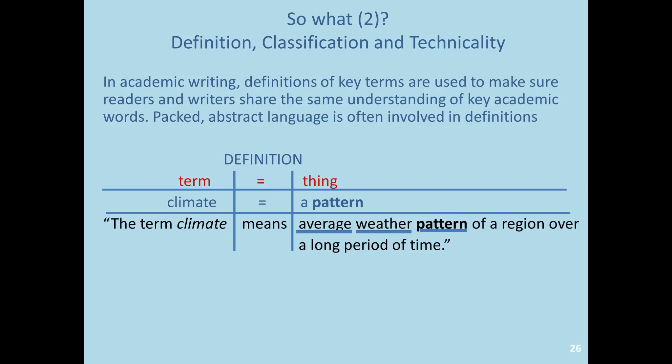A definition generally involves a key term that we want to define, some kind of verb that acts like an equal sign, like the verb 'to be,' and then a defining word, which is a thing. In the case of climate, we have 'climate means,' and then what climate is: climate is a pattern. That's the kind of thing that climate is defined as in science.